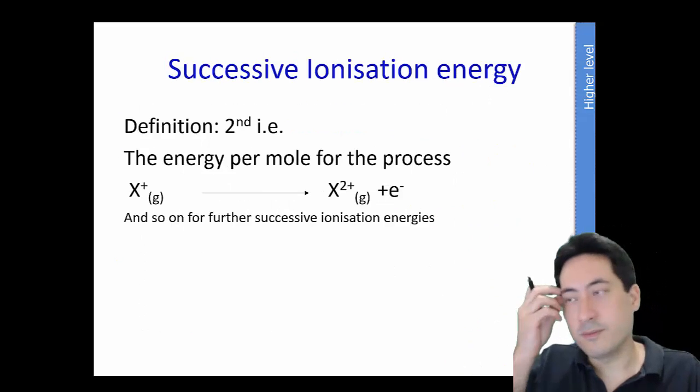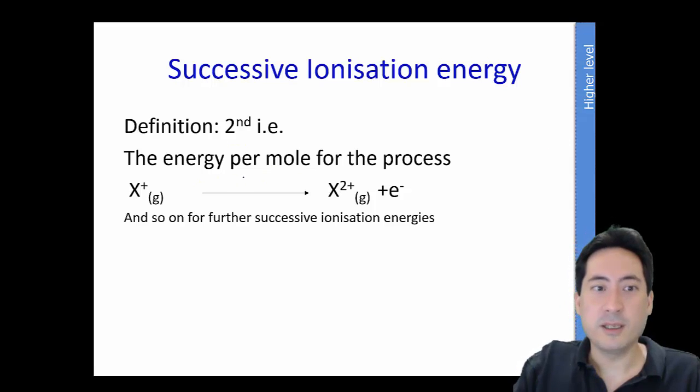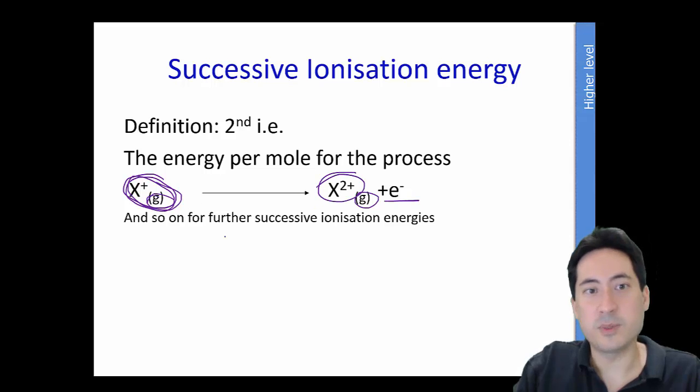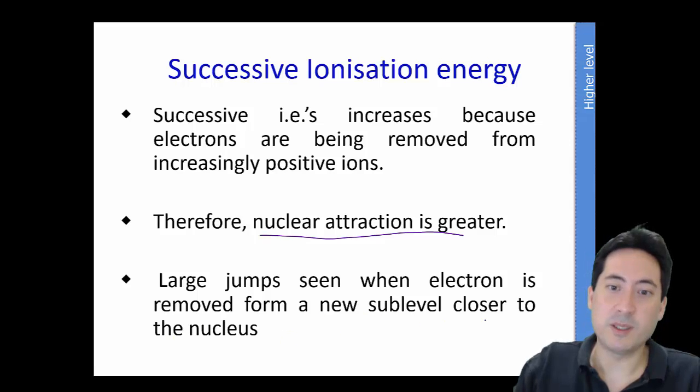So moving on to successive ionisation energies now, this is how you write it. It's already lost one electron in the second ionisation energy. It must be in the gaseous state of course, otherwise you won't get a mark. You remove one more electron and so that's the second electron now. So now the substance is 2+. And in a similar way, as successive ionisation energies, it's going to be much, much harder. And the reason for is going to be nuclear traction. And there's also going to be jumps being seen with different sub-levels.